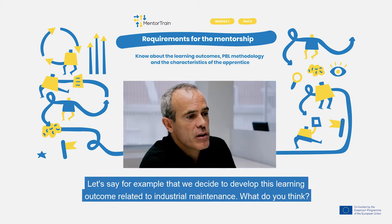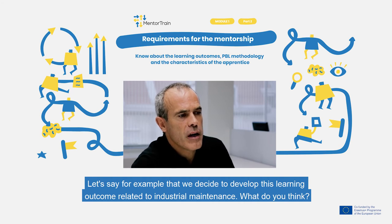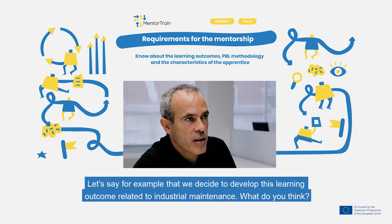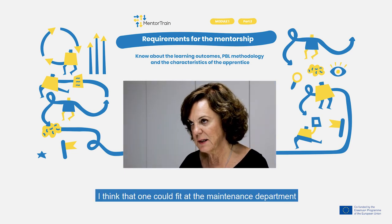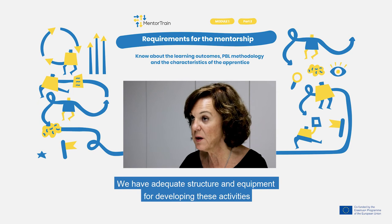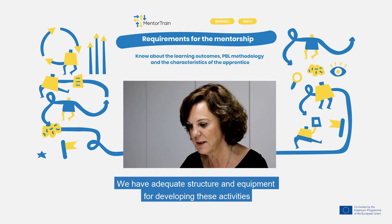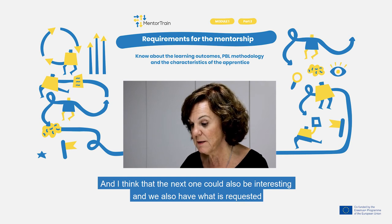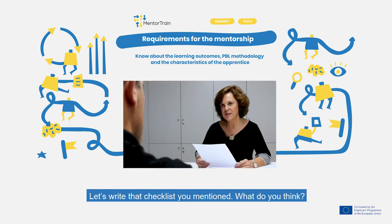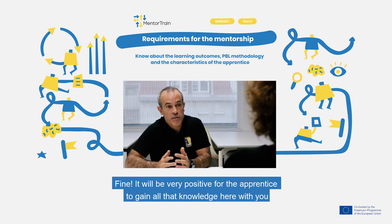Let's say, for example, that we decide to develop this learning outcome related to industrial maintenance. What do you think? I think that one could fit at the maintenance department — we have adequate structure and equipment for developing these activities. And I think the next one could also be interesting, and we also have what is requested. Let's write that checklist you mentioned. It will be very positive for the apprentice to gain all that knowledge here with you.